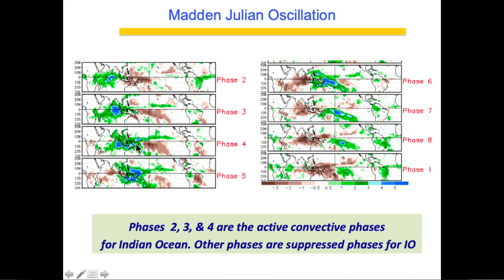As MJO moves to phase 4, it covers part of the maritime continent or South China Sea while also covering a little bit of the East Indian Ocean. Phase 5 is Western Pacific plus maritime continent, phase 6 is Western Pacific, phase 7 is central, and phase 8 covers Atlantic plus Eastern Pacific. Then it circulates back — so it is a loop. Phases 2, 3, and 4 are of greatest interest because that is when both the North and South Indian Ocean receive a lot of rain. We always wait for MJO to move into our basin because it will very likely bring a lot of wet activity.